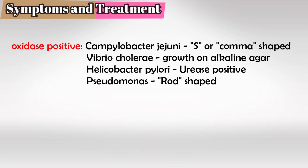Campylobacter is oxidase positive, and for your Step 1 exam there are only four oxidase-positive organisms you'll have to know: Campylobacter, which is S-shaped or comma-shaped with flagella at the polar end; Cholera, which can cause watery rice diarrhea and can grow on alkaline agar; H. pylori, which is urease positive and infamous for causing urinary stones; and Pseudomonas, which is rod-shaped. Meaning, if you ever get a scenario on the exam that says oxidase-positive organism, it's going to be one of those four.